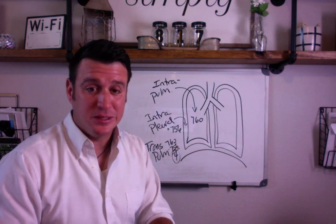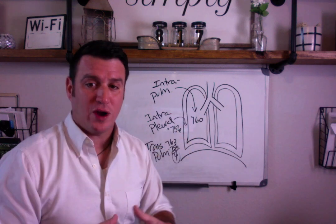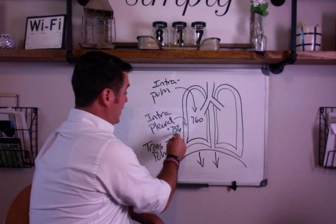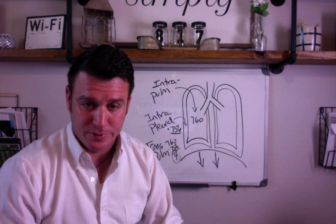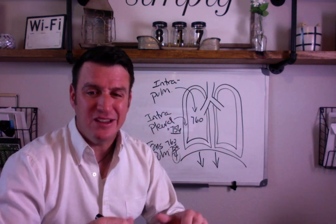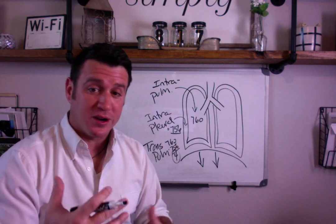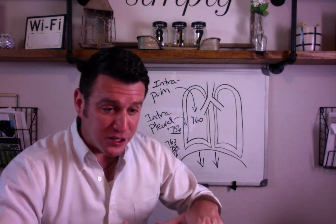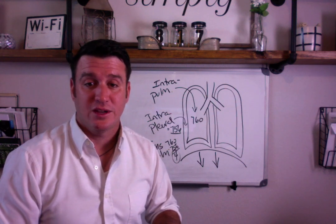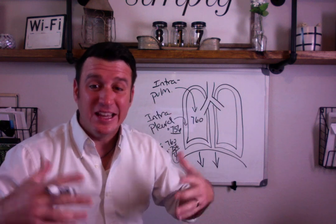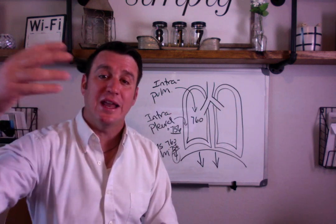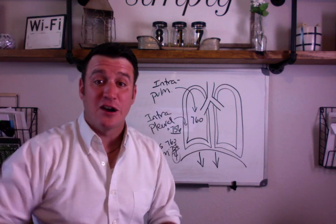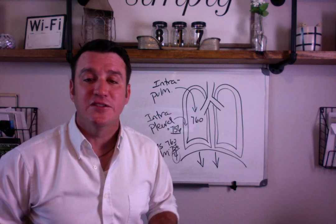Spontaneous breathing happens because upon inspiration, our diaphragm contracts and moves downward. As the diaphragm moves down, it causes the intrapleural pressure to become more negative — to decrease even further — which increases the transpulmonary pressure and causes the lungs to fill with air and expand. This negative pressure in the chest wall allows atmospheric gas to enter the lungs because of the change in the pressure gradient.